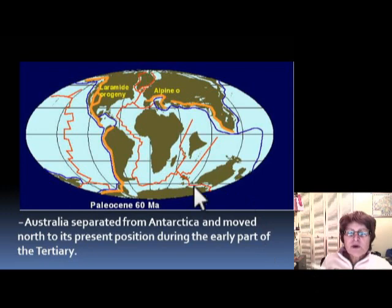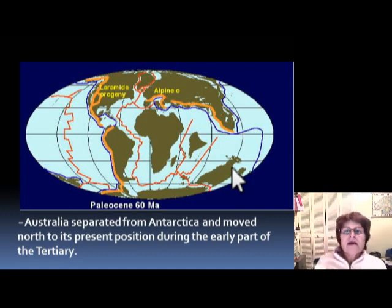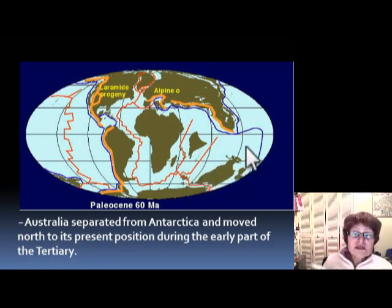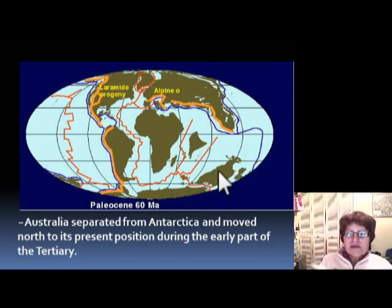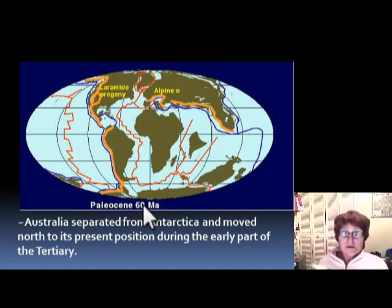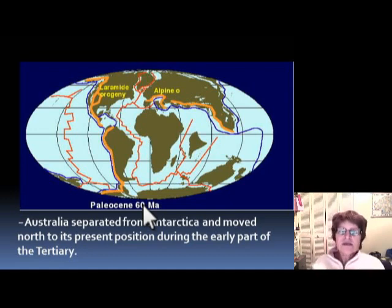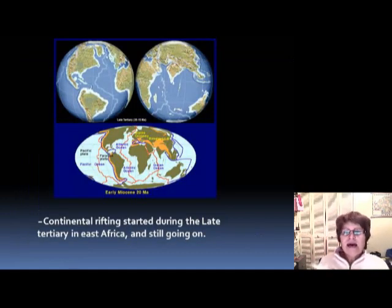Probably one of the most important events during this time is that Australia and Antarctica started to break away from each other. After rifting, Australia moved north to its present-day location, while Antarctica moved south to its present-day location right on the South Pole. This is significant because to have an ice age, there has to be a continent at the pole — we'll talk about that in more detail later.